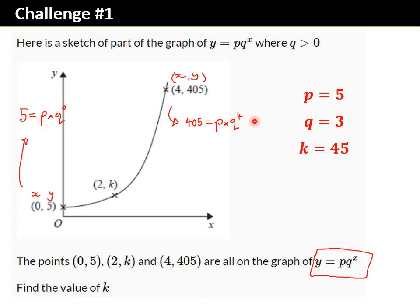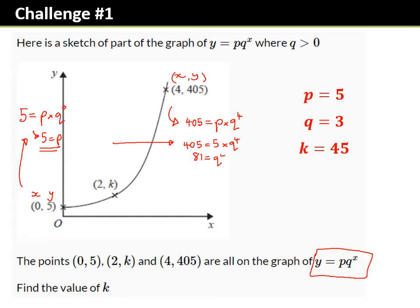We can't do an awful lot with the first equation as it stands because we've got two unknowns and a single equation, so there are infinite possible answers. But the second equation is quite useful because q^0 = 1, so this tells me that 5 = p × 1, meaning p = 5. As soon as I've got that I can substitute it in: 405 = 5 × q^4. Dividing both sides by 5, we get 81 = q^4, and then we want the fourth root of 81.